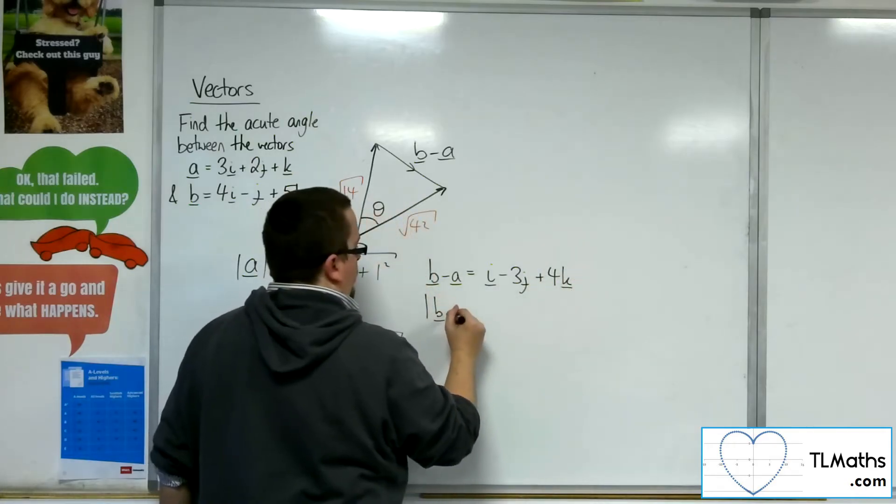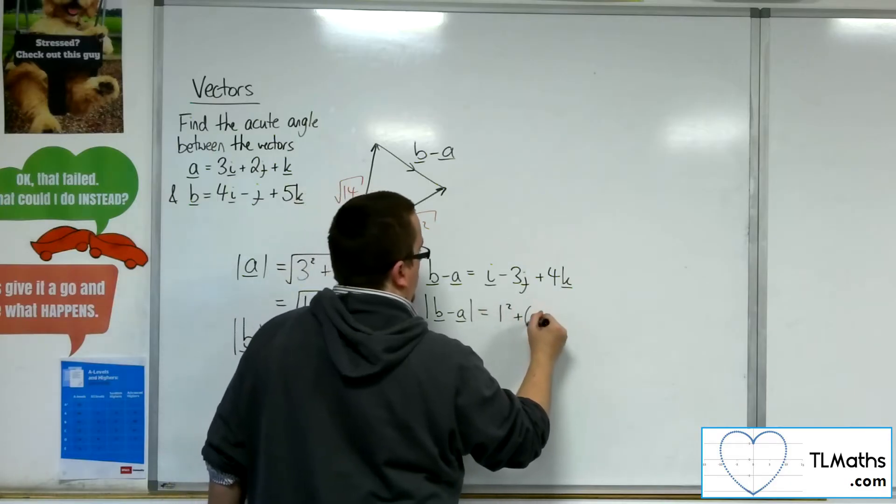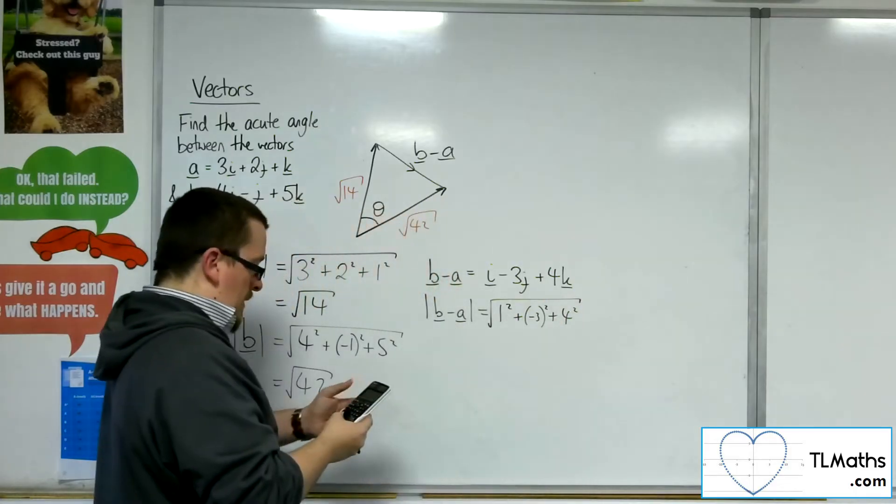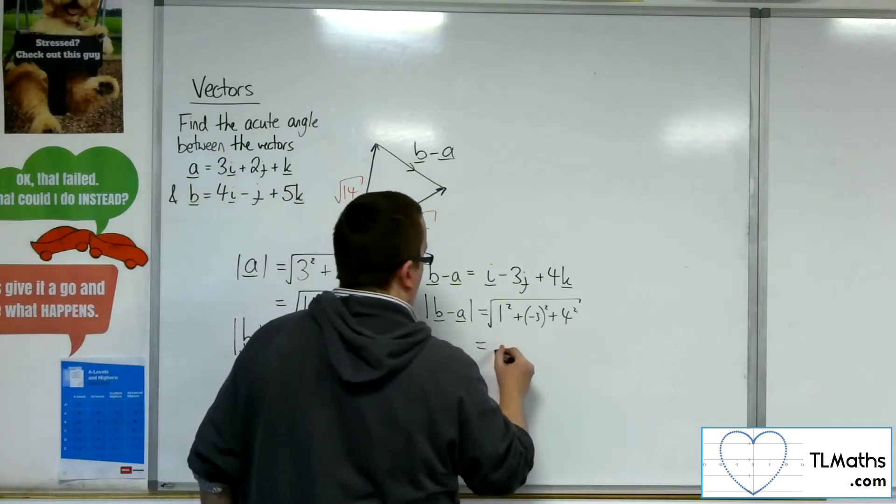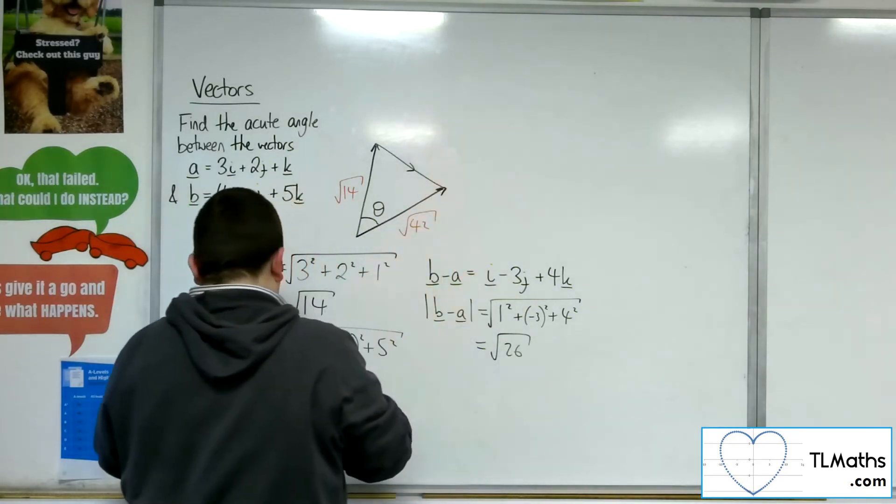So then I'd need to find the length of that vector, which would be 1 squared plus minus 3 squared plus 4 squared, square rooted. So 1 plus 9 plus 16, so root 26. So that would be the length of that vector.